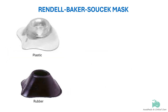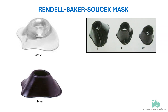The Rendell Baker-Sousek mask, also called the RBS mask, is designed for pediatric patients. It has a triangular body and is available in sizes 0, 1, and 2. It has a low dead space — 4 milliliters in size 1 and 8 milliliters in size 2. Since it adequately fits the child's face, no special seal is needed. Some of these masks are scented and may have a pacifier.